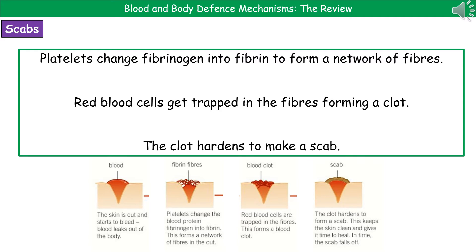Welcome to our review on blood and body defense mechanisms. The first thing we're going to consider is how our body defends itself against the invasion of various pathogens in the eventuality that you've managed to cut yourself. When you cut yourself, you start to bleed — blood is leaking out of your body because you've damaged the physical barrier that keeps everything inside separate from everything outside.